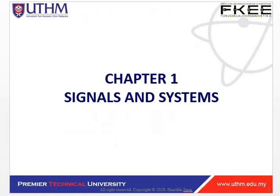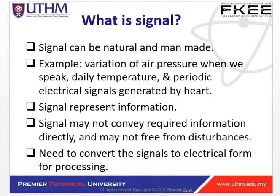Chapter one is the signal and system. What do you know about signal? Signal can be natural and man-made. For example, variation of the air pressure when we speak, daily temperatures, and the periodic electrical signals generated by the heart. Signal also represents information and is strongly related to the waveform. It contains information about the behavior of the phenomena. Also, a signal may not convey required information directly and may not be free from disturbance — meaning there is noise. So you need to convert the signal to electrical form for processing.